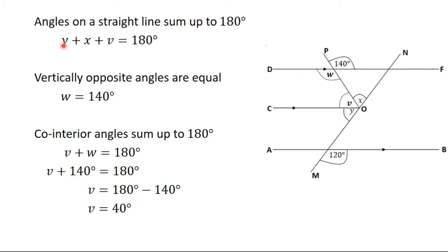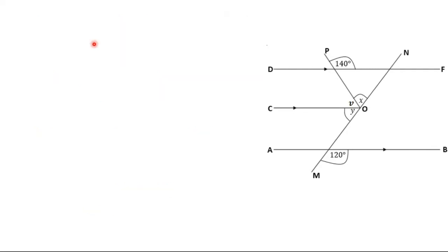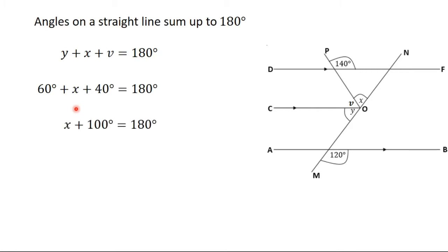Now I have Y and V, so I can find X. Y plus X plus V equals 180 degrees, since angles on a straight line add up to 180 degrees. Y is 60 degrees and V is 40 degrees, so 60 plus X plus 40 equals 180 degrees, which gives X equal to 80 degrees.